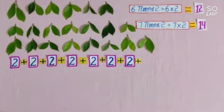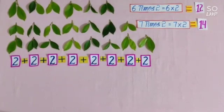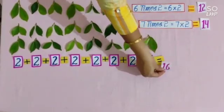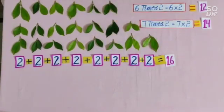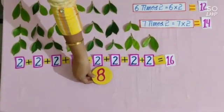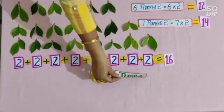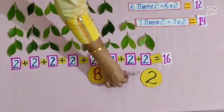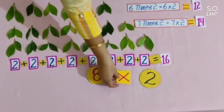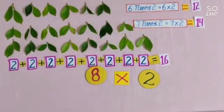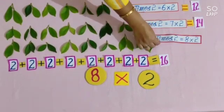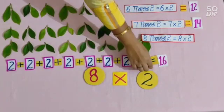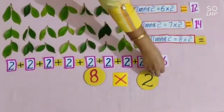By taking 2 more leaves, the number of leaves are 16, and groups of leaves are 8. So we will write this: 8 times 2. In place of times, we will put the sign of multiply. So we will write this: 8 times 2 is equal to 8 multiplied by 2 is equal to 16.